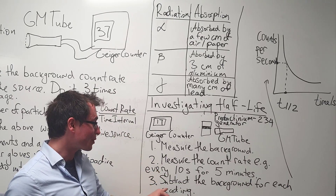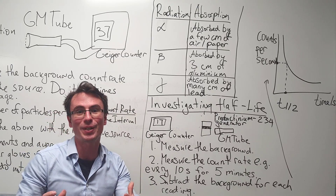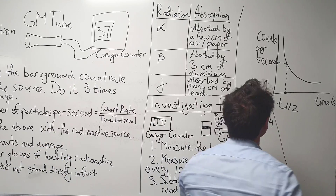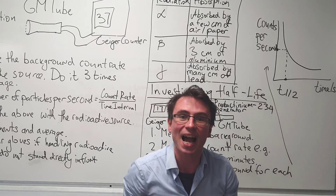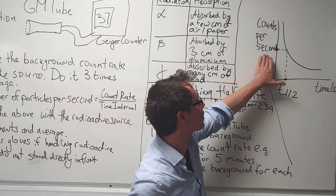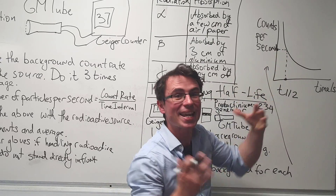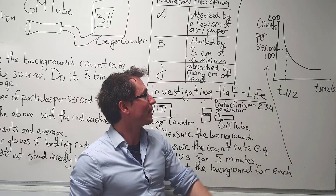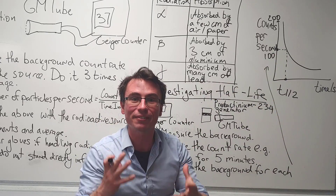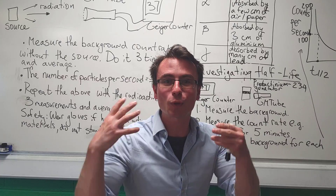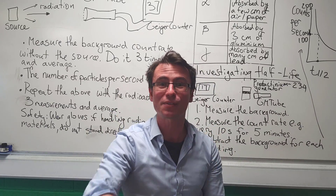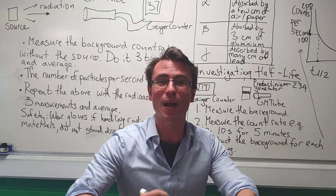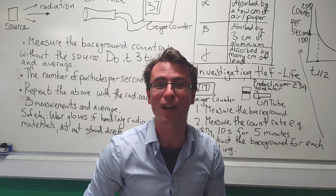Just like before, we're going to subtract the background for each of those readings and then produce a graph of count rate per second against time. The time at which the count rate has decreased by a half gives us the half-life. Talking about half-life, to ensure you've covered everything on the specification, you need to have a look at another video in which we look at a very clever graphical way to determine the half-life of a substance.